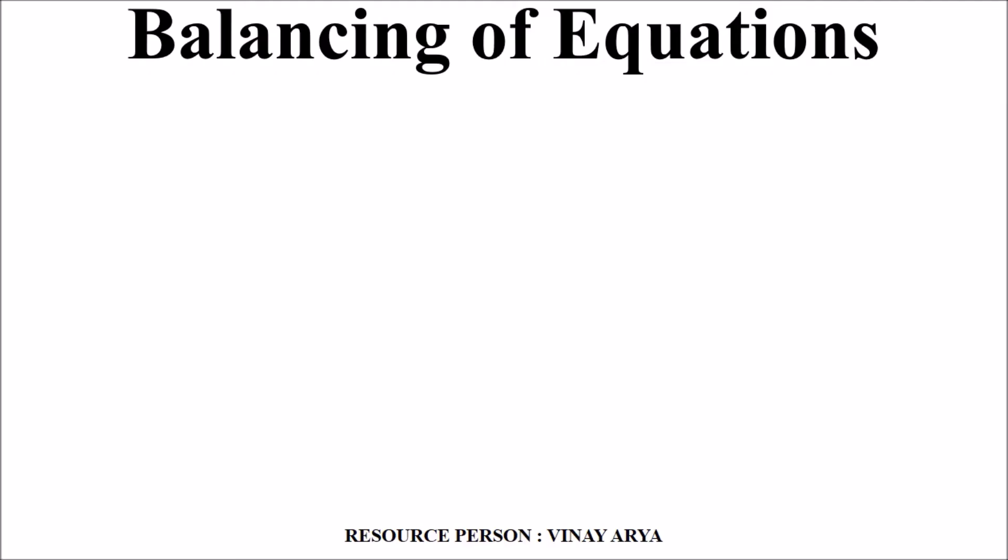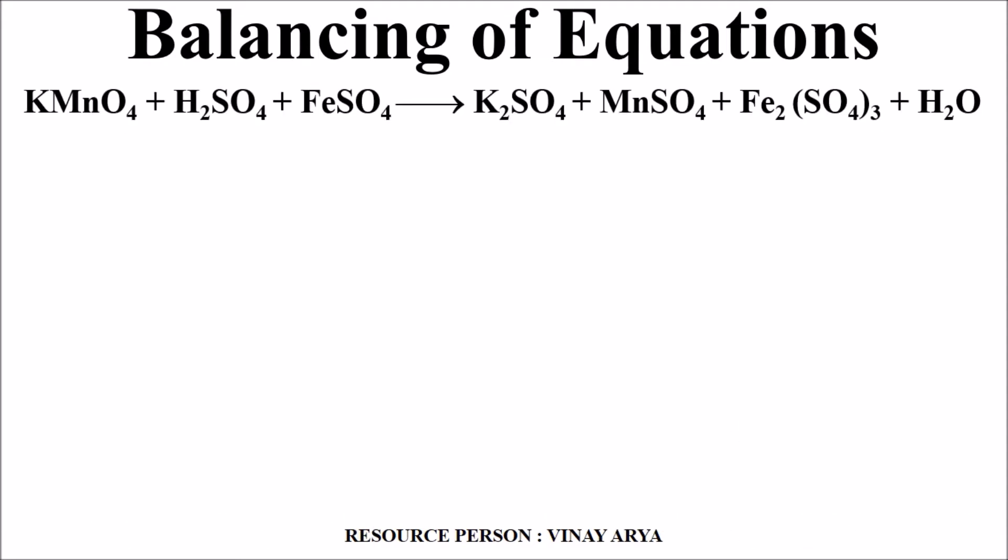Similarly, reduction is removal of oxygen, addition of hydrogen, addition of electron, and decrease in oxidation number of the element. As there was doubt in one of the reactions for balancing, a student has asked for a reaction and that reaction was acidified KMnO4 converts ferrous sulfate to ferric sulfate.